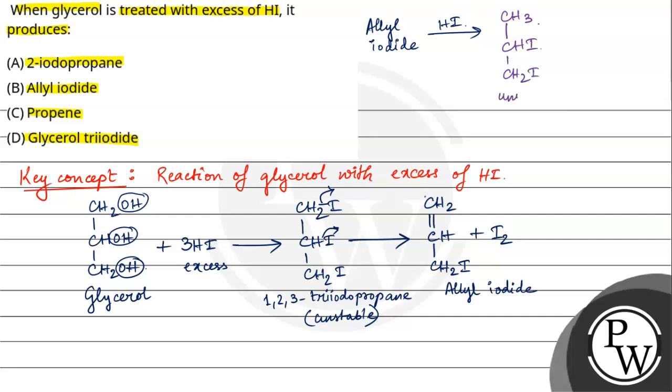This will be unstable. Here will be minus I2, iodine will leave. And then, this will be CH3. Now, this will be double bond form because the two of them are leaving. So, this will be CH3CH double bond CH2. That is propene.